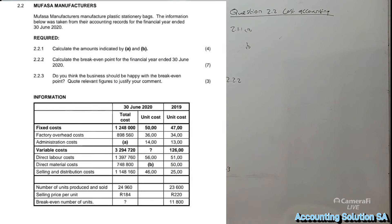Let's start with our question. Question 2.2.1: calculate the amount indicated by A and B. It's four marks, and after that we're going to calculate break-even point and do a comment.